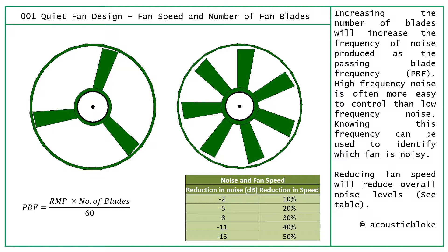We tend to find that if we add more blades and get a higher frequency noise from the fan, it's more readily controllable. It's easier to control higher frequency noise because it tends to be easier to absorb with acoustically absorbing materials, and it tends not to have such an impact over significantly large distances.